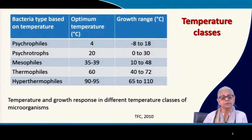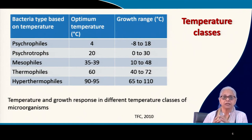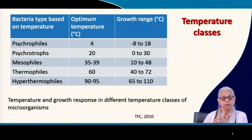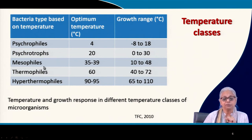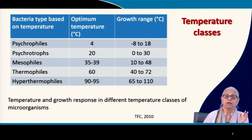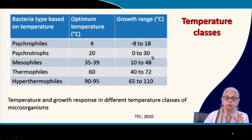Now we come to temperature classes. Bacteria have been classified according to their optimum temperature. Bacteria in our environment have an optimum temperature of about 35 to 39 degrees centigrade and a range of 10 to 48 degrees centigrade — these are mesophilic bacteria. When food is exposed to these mesophilic bacteria within those temperature conditions, it will spoil.